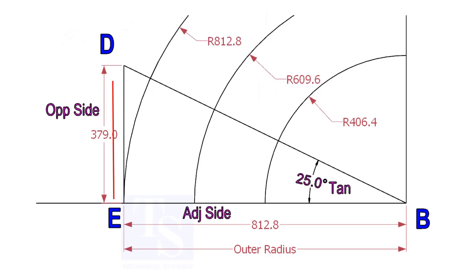Draw the line ED vertically and the slant line DB. I hope now you will be able to draw a line in any degree.